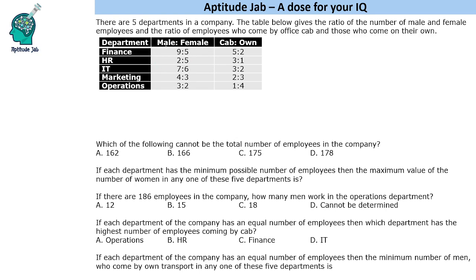If you see male and female, let us say 9A is the number of male employees and 5A is the number of female employees, so we have total 14A employees. Similarly, for cab ratio, let us say the number is 5B and 2B, so we should have 7B as the total number of employees. The number of employees should be equal in the finance department. So what we will do is take the LCM — we will put it as 14B, so the numbers would be like 10B and 4B.